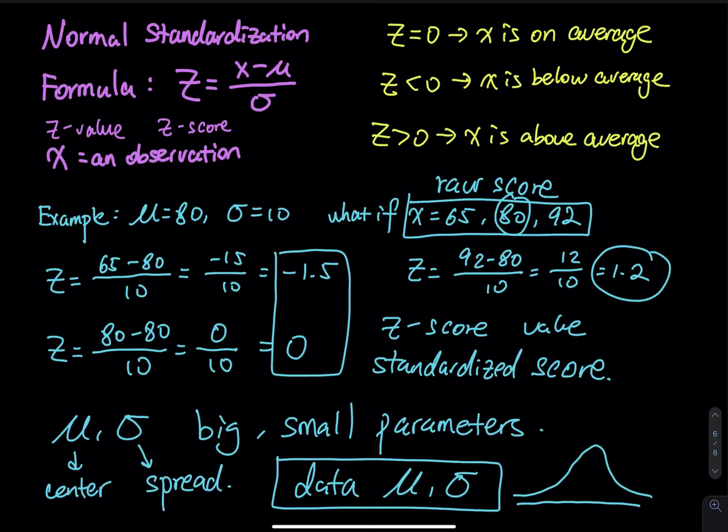So but if you collect another set of data, then you have a different mu, you have a different sigma, you have a different curve. And the curve, if you compare the first two curves, they have different center and they have different spread.